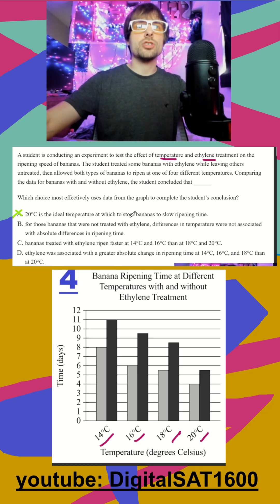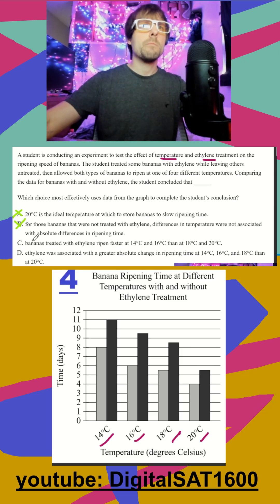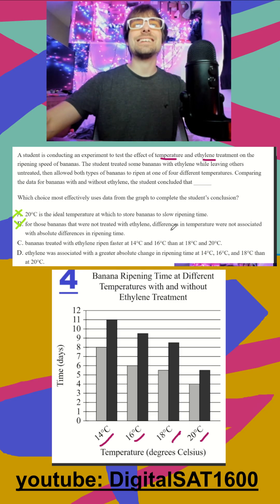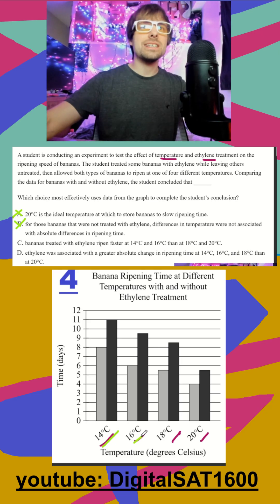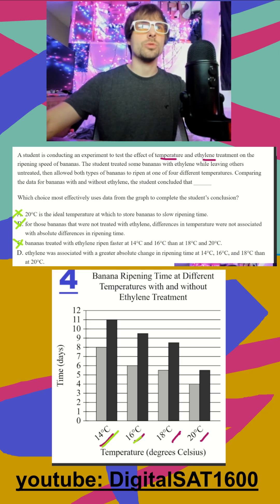Option C says for those bananas that were not treated, differences in temperature were not associated with absolute differences — I don't even know what they're saying there. Option D says bananas treated with ethylene ripen faster at 14 and 16 than at 18 and 20. That's not true — it's the opposite.